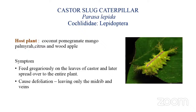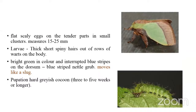The larvae feed gregariously on the leaves of castor and later disperse all over the entire plant. This caterpillar also causes defoliation, leaving only the midrib and veins at last.